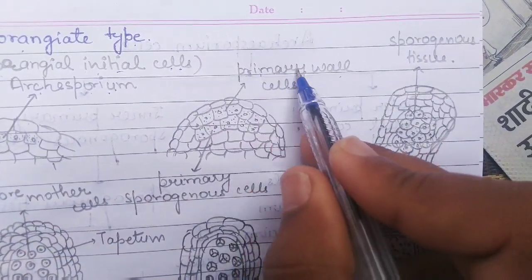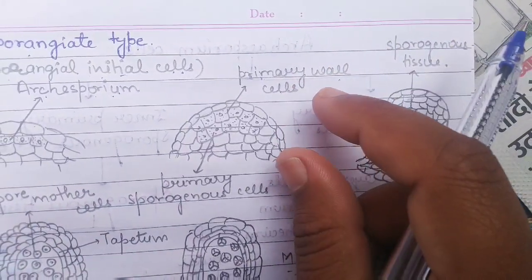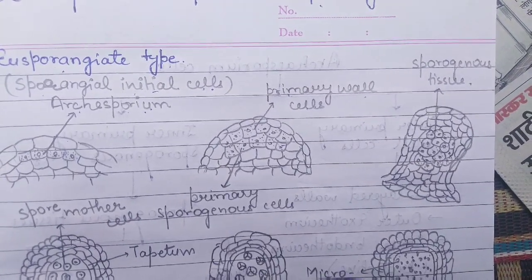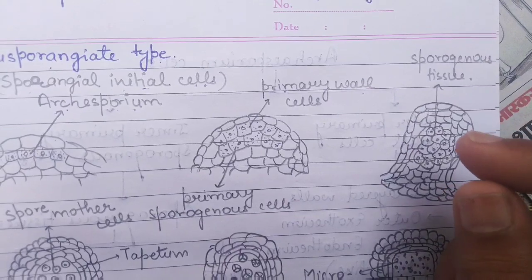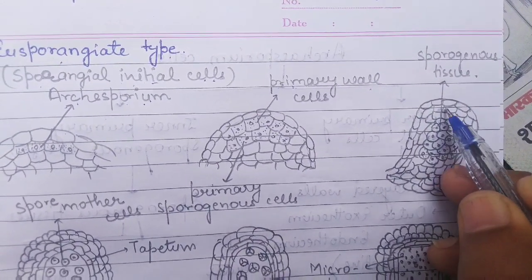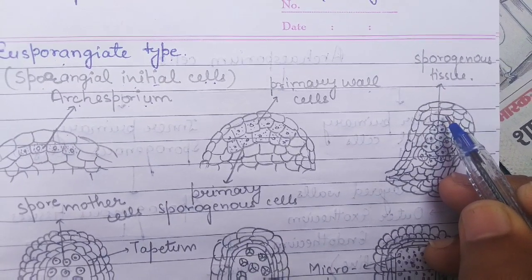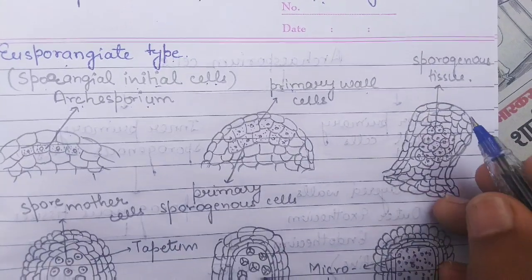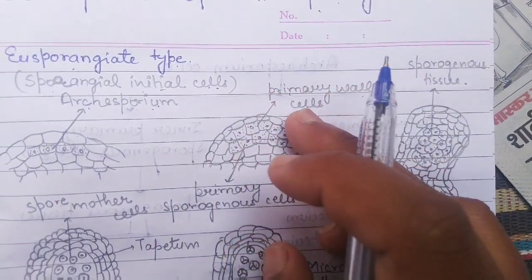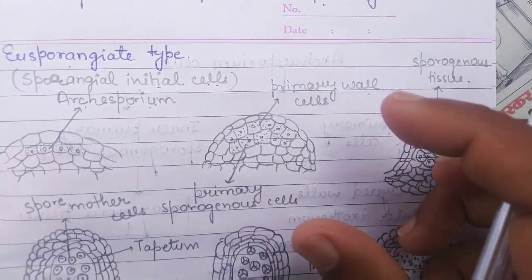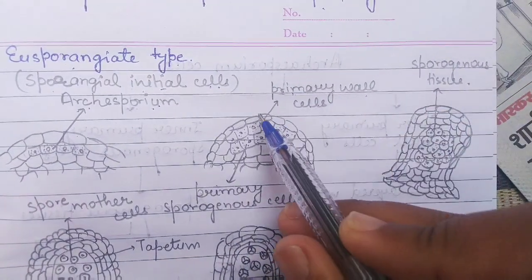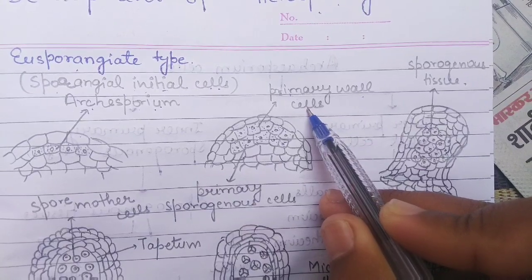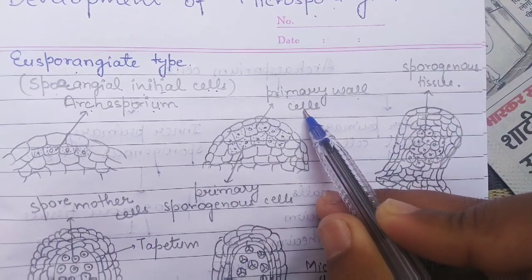The primary wall cells then divide two or three times by both anticlinal and periclinal division — that is by horizontal and vertical division — to form 3 to 6 layered walls. These 3 to 6 layers make the wall of the Microsporangia, present beneath the epidermis. The outermost epidermis lies on top, and beneath it the primary wall cells divide repeatedly by anticlinal and periclinal division to form these 3 to 6 layered walls.